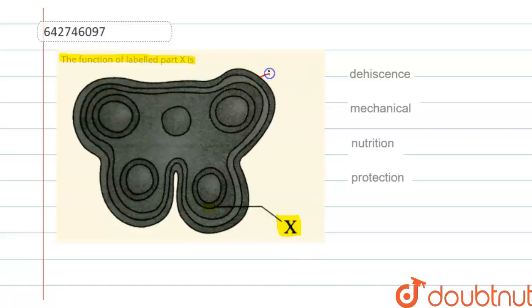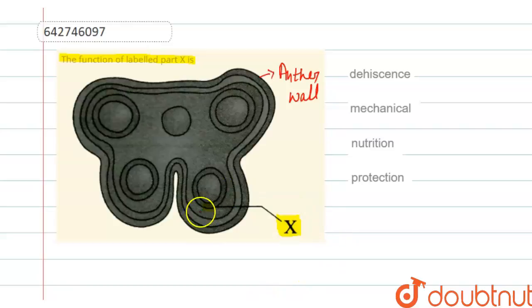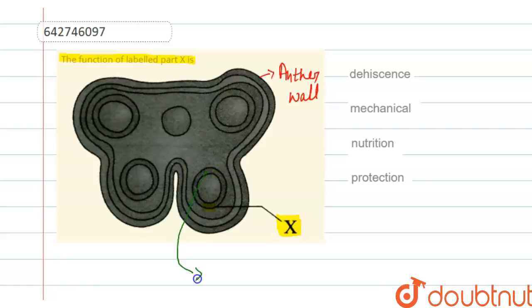If we talk about the anther, it has an outermost layer known as the anther wall, where the endothecium and epidermis are present. There is also a middle layer present. If we talk about the central part of it, at the center there is sporanginous tissue.